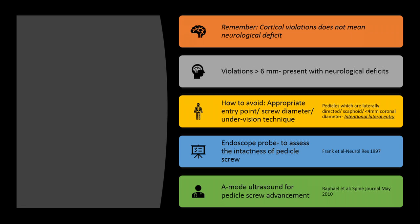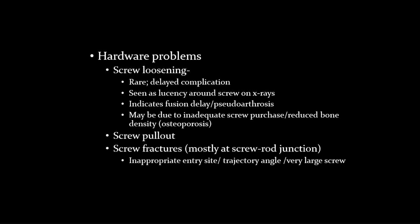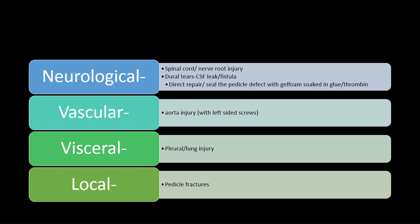Remember, cortical violations do not mean there is going to be a neurological deficit, but you have to be careful. If you have neuromonitoring, that's the best. Always use proper entry points and make sure trajectory is correct to avoid these complications. There are a lot of hardware problems - without fusion, if you keep your hardware in too long, it will cause issues such as breakage, removal difficulties, pseudoarthrosis, and screw fractures. These major complications have been seen at our institution.